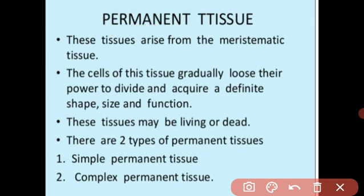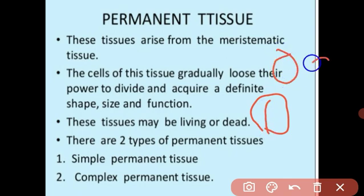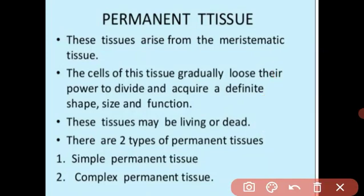Let me explain a little. A cell divides into two cells — this is called cell division. Due to cell division, our growth happens. If cell division does not happen, there is no growth. Meristematic tissue has the ability to divide.